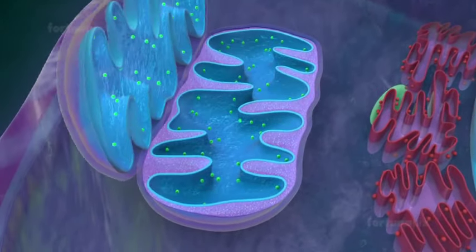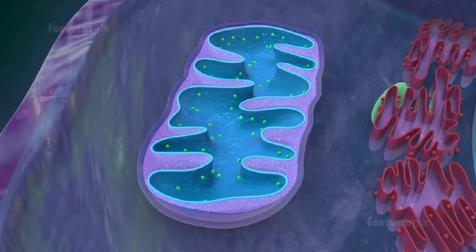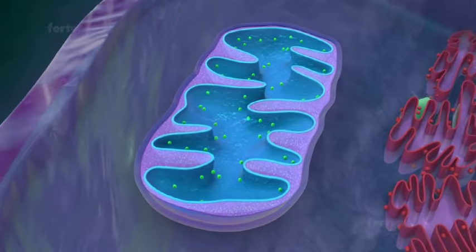Mitochondria are bound by two membranes. Each membrane is a phospholipid bilayer with embedded proteins.